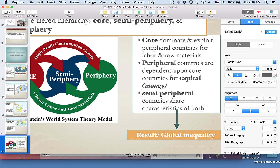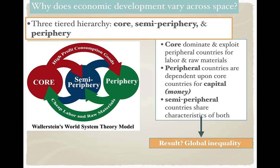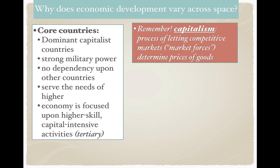Semi-periphery countries share characteristics of both. But fundamentally, what this entire system is rooted upon is Wallerstein's acknowledgment that capitalism — using supply and demand to control the prices of goods — will ultimately lead to a system of core countries exploiting periphery countries, leading to general global inequality. There will always be a core of industrialized regions and an area that loses — the periphery. Capitalism, as Karl Marx also argued, is what causes this system of haves and have-nots.